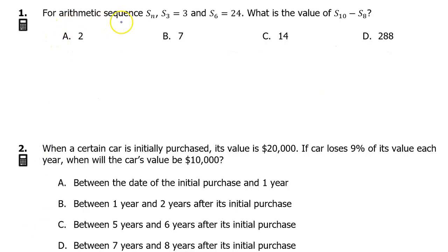Number 1. For arithmetic sequence S_n, S_3 equals 3 and S_6 equals 24. What is the value of S_10 minus S_8? We have learned that an arithmetic sequence can be modeled by S_n equals S_k plus D times (n minus k), where S_n is the nth term of the sequence, S_k is term k, and D is the common difference.